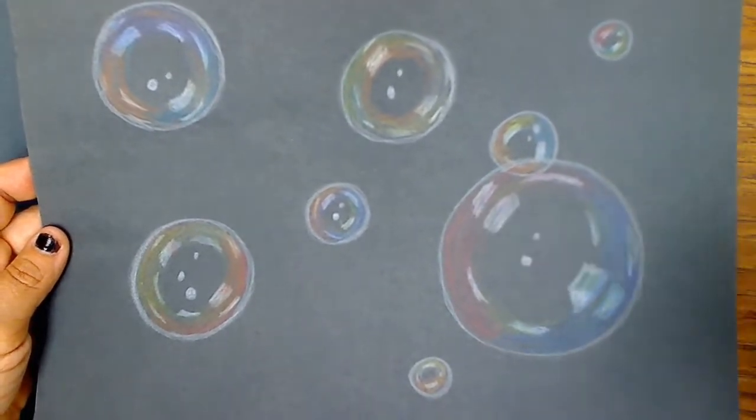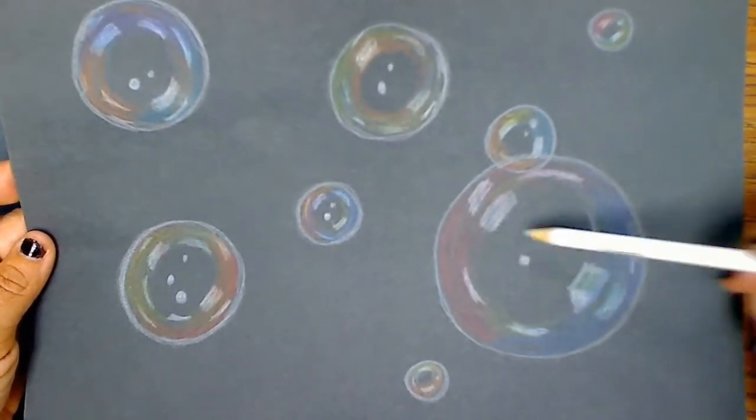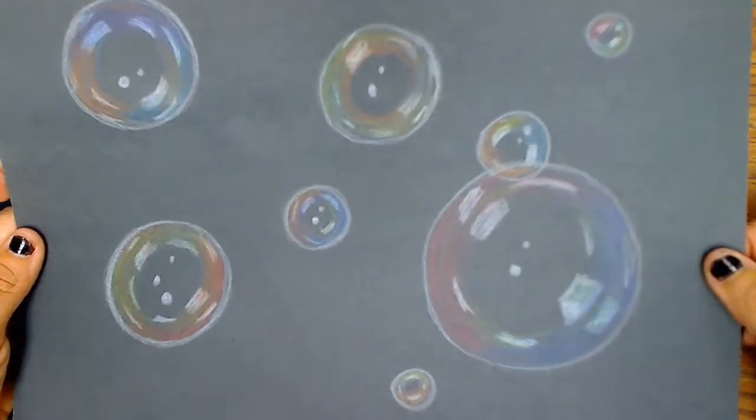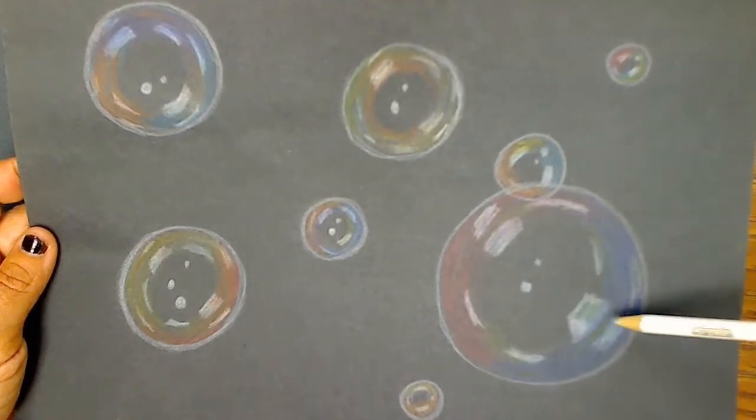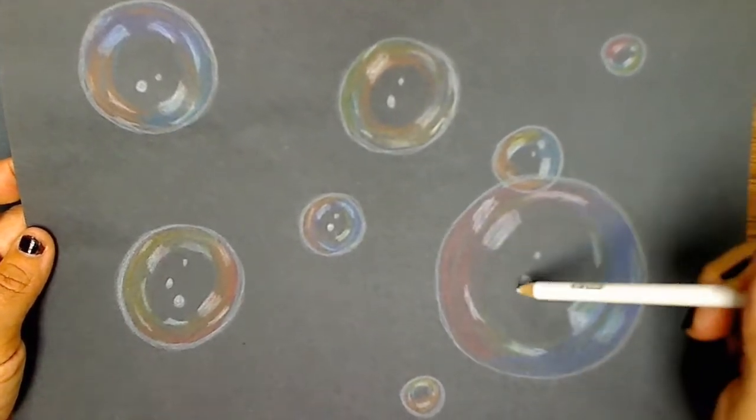If you look at a picture of a bubble, the middle part is going to be clear and in this case it's going to be black because our paper is black. They have a lot of white highlights, so there's white along the edges and there's some white highlights and some little white dots for the highlights in the center.